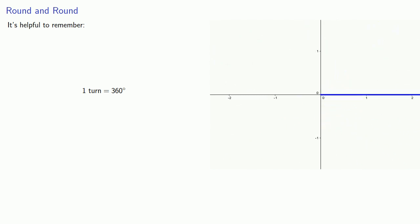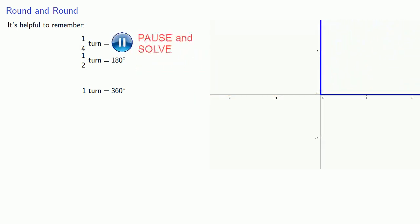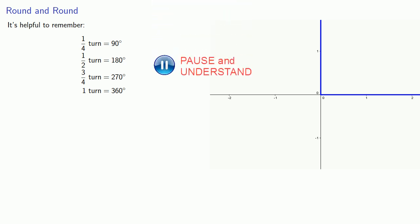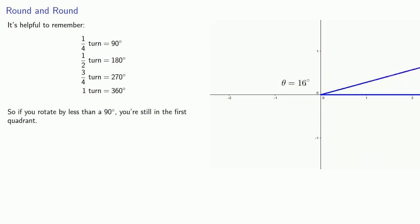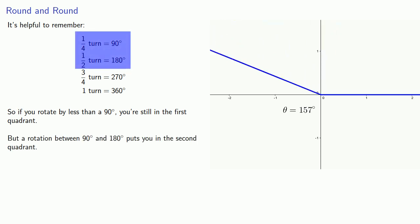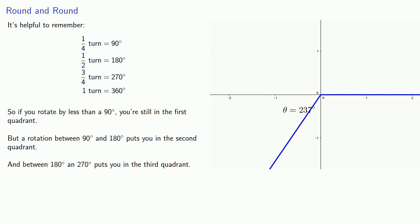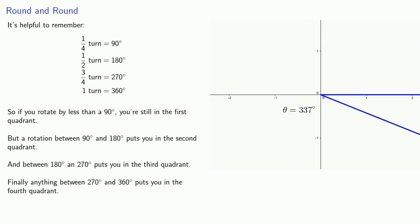When drawing angles in standard position, it's helpful to remember that a full turn is 360 degrees, a half turn is 180 degrees, a quarter turn is 90 degrees, and three quarters of a turn is 270 degrees. If you rotate by less than 90 degrees, you're in the first quadrant. A rotation between 90 and 180 degrees puts you in the second quadrant. Between 180 and 270 degrees puts you in the third quadrant, and anything between 270 and 360 degrees puts you in the fourth quadrant.